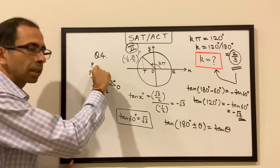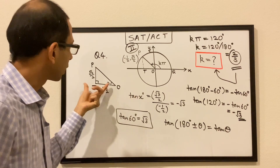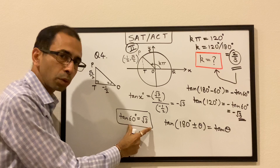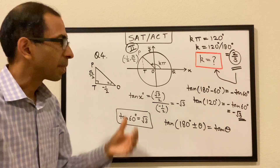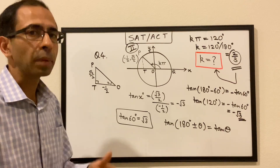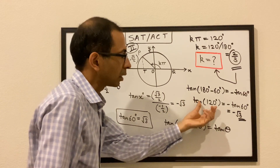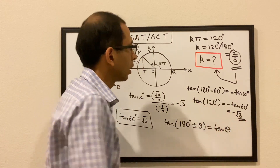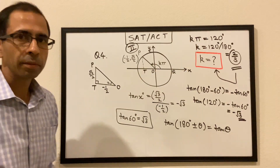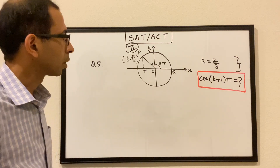To quickly reiterate: we focused on the right angle triangle formed by the coordinates, used tan since we had opposite and adjacent, and got tan(x) = −√3. Knowing tan(60°) = √3 and that tan(180° − 60°) = −tan(60°) = −√3, the angle is 120°. Setting kπ = 120° and using π = 180° gives k = 2/3.